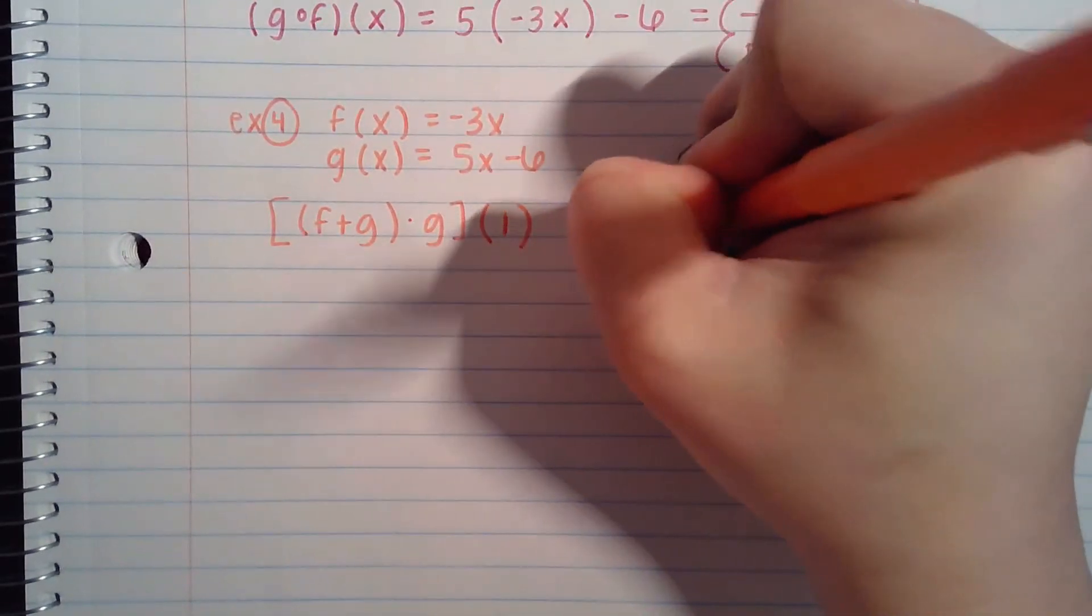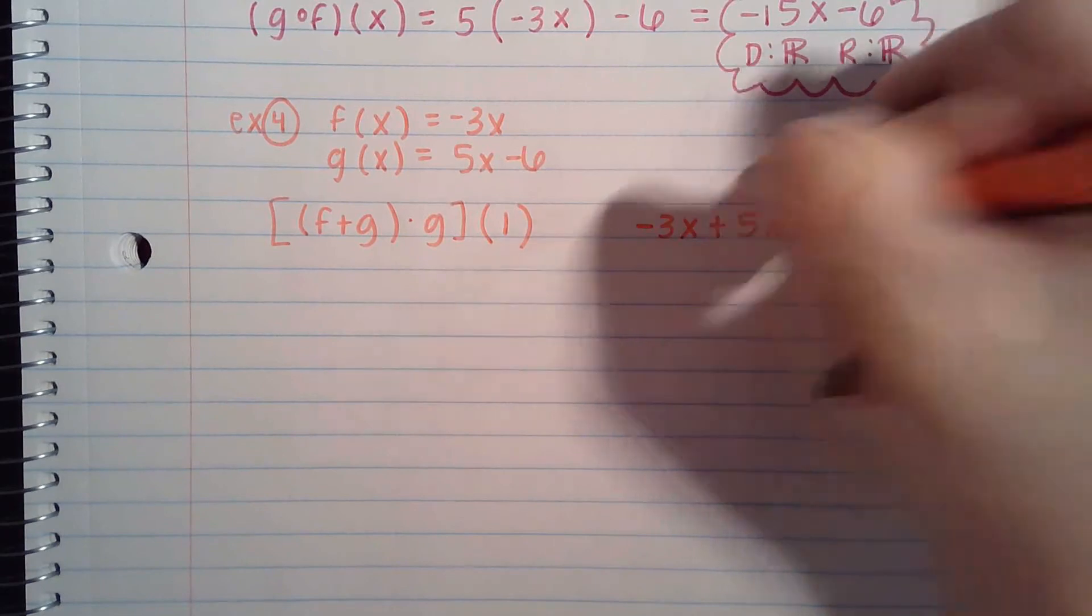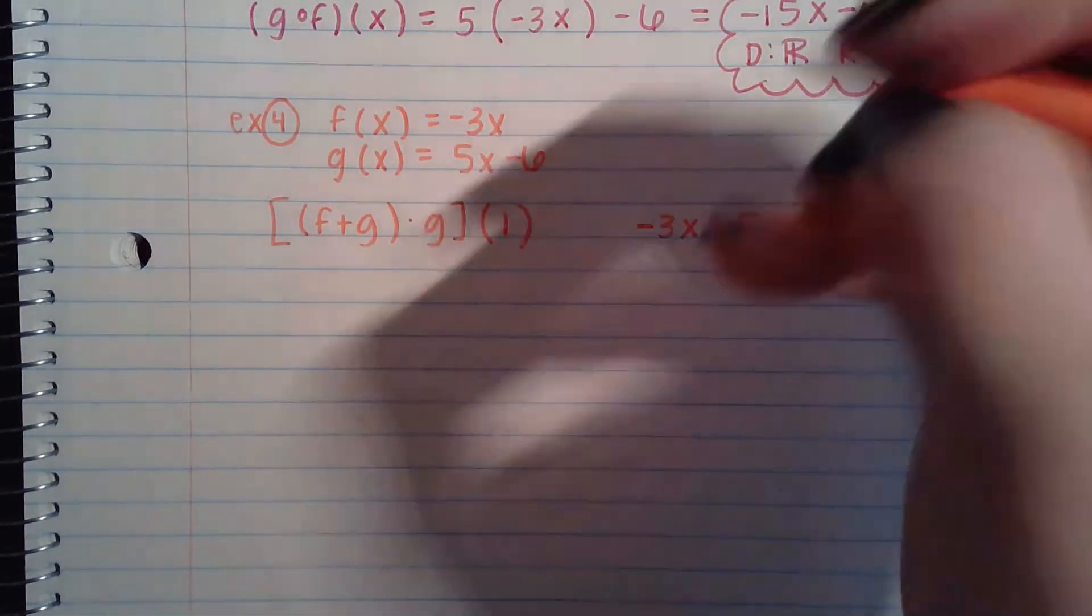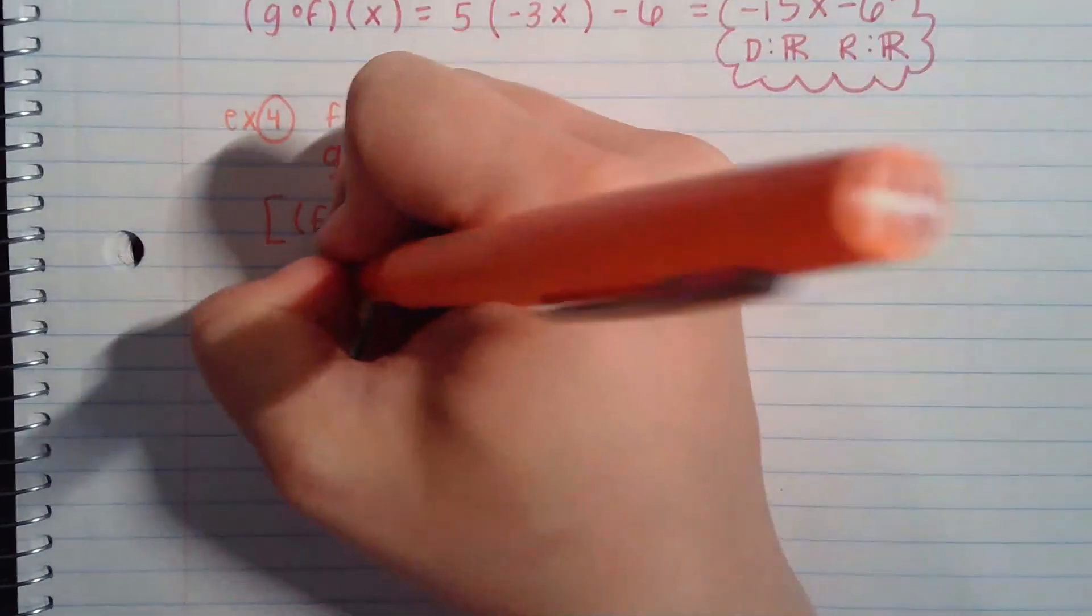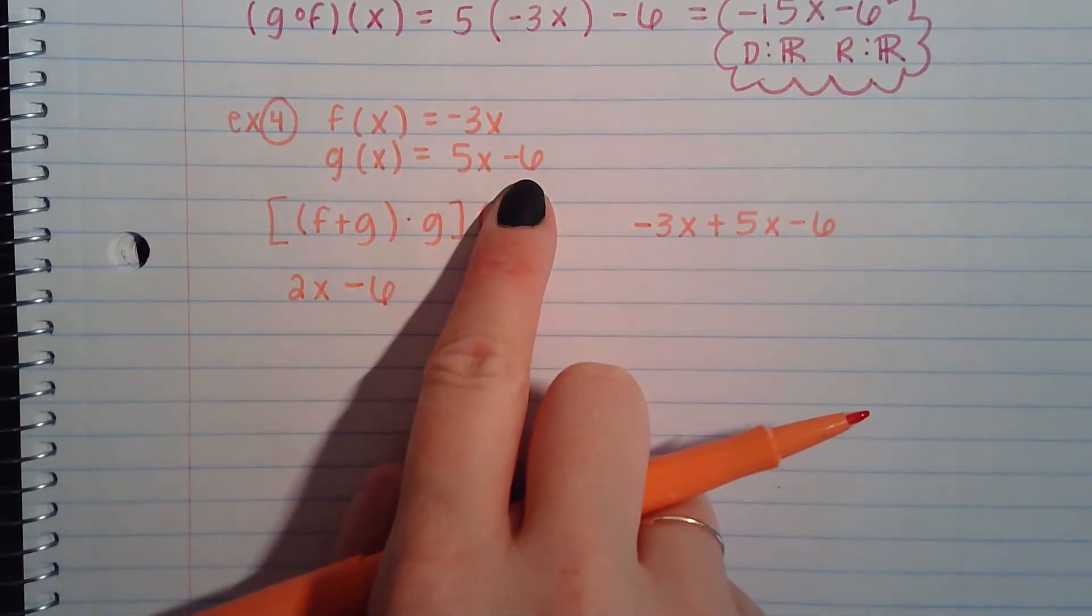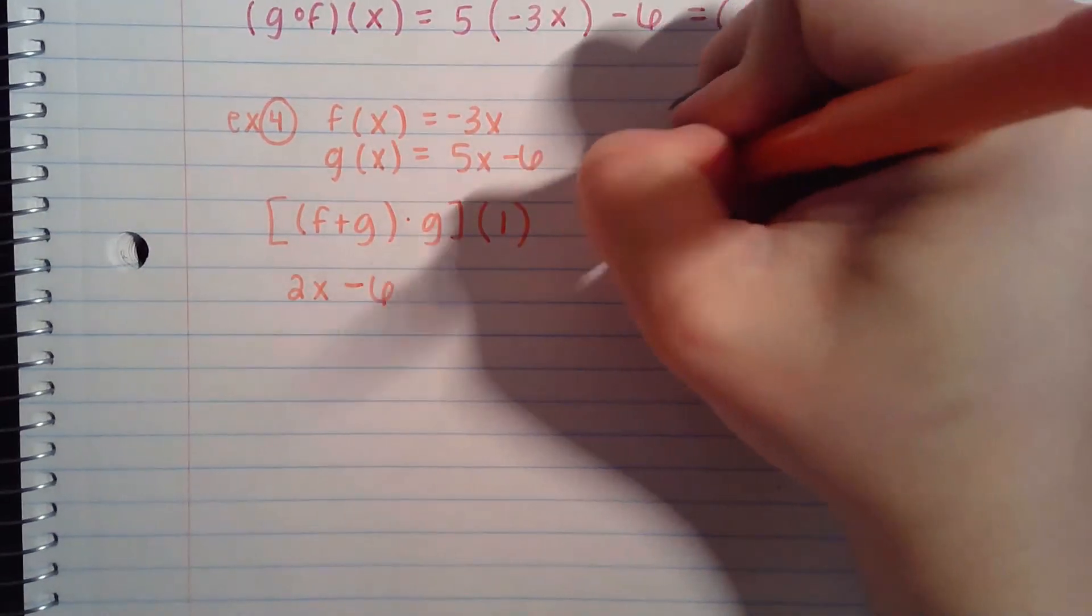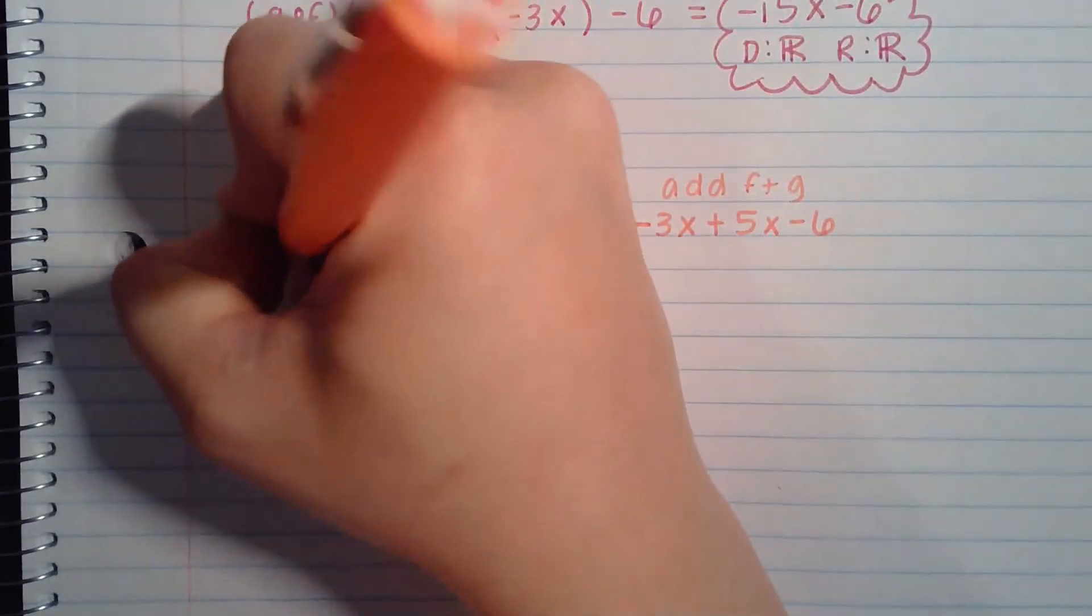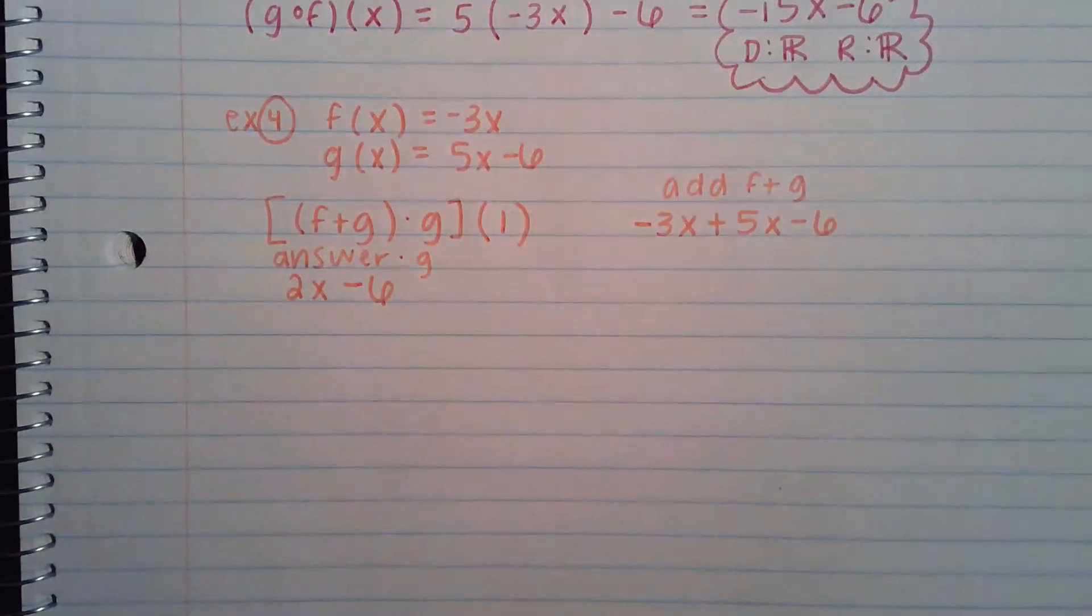So let's start with doing f plus g, which would be negative 3x plus 5x minus 6. Combine like terms, negative 3x plus 5x is 2x minus 6. From there, we would multiply this times the g equation. So we're taking what we got when we added them together. We're going to take the answer. We're going to multiply that times the g equation.